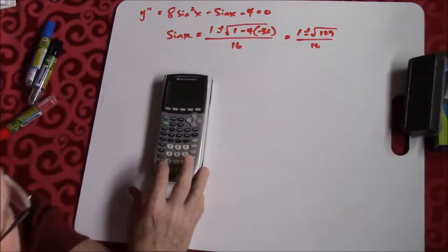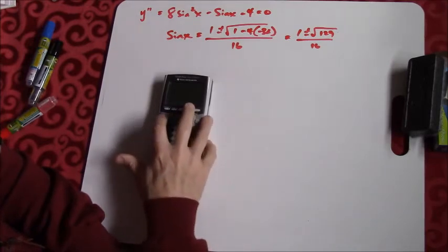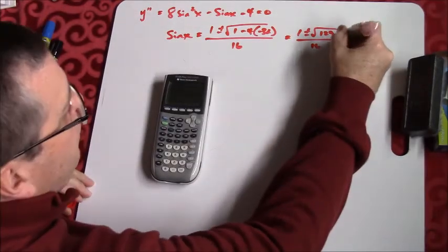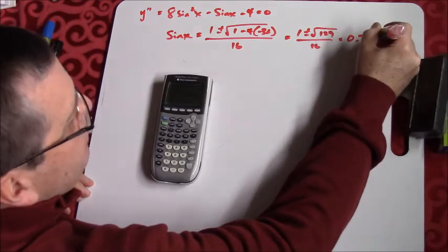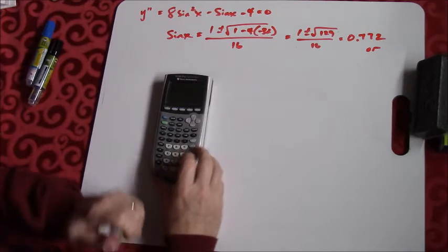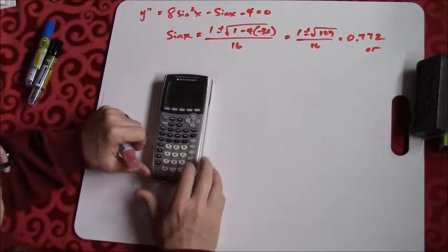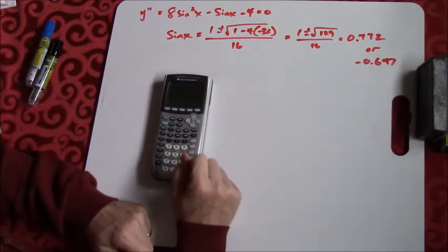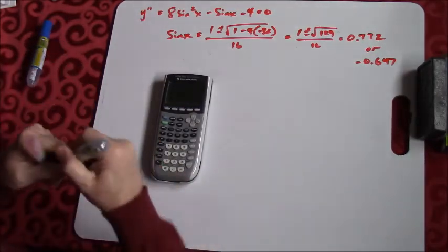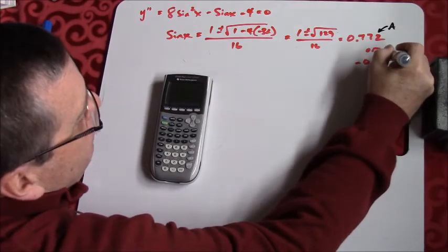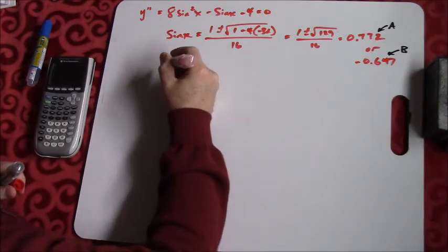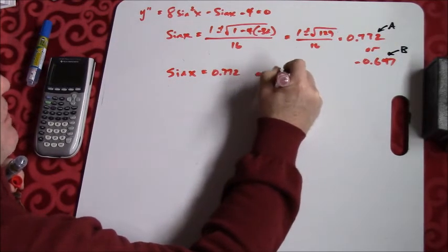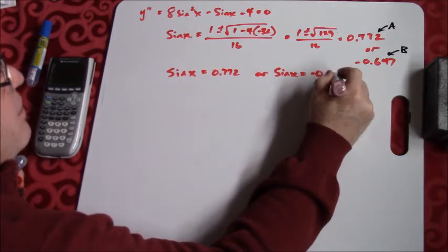It might be easier to go with decimal numbers. With the plus, I get 0.772; with the minus, I get negative 0.647. I'll store these as A and B. So the sine of x equals 0.772, or the sine of x equals negative 0.647.